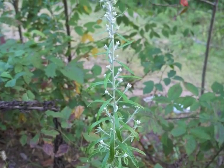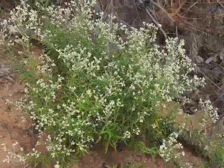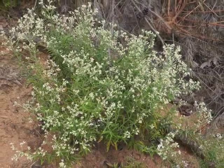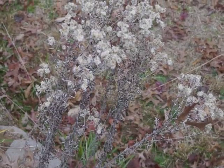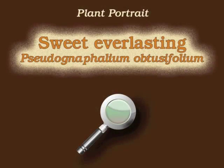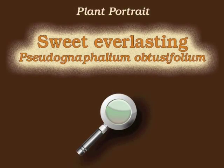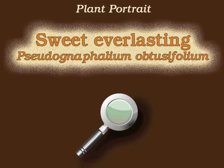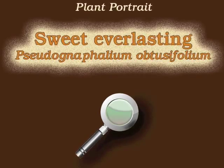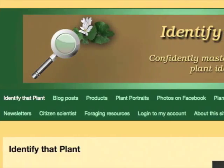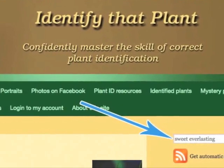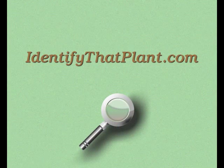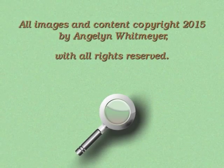Sweet Everlasting is a plant which blooms in late summer and throughout the fall, and we can appreciate its form even through the winter months. This is Angeline. Thank you for watching and learning about Pseudognaphalium obtusifolium, also known as Sweet Everlasting. Visit IdentifyThatPlant.com for more images of Sweet Everlasting, plant identification resources, and information about how you can confidently master the skill of correct plant identification.